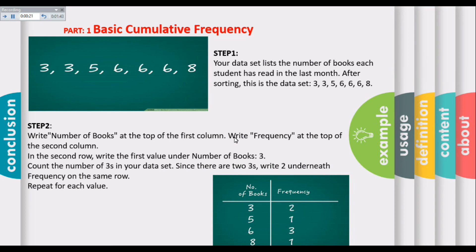Step 2: Map two columns as shown in the picture. Write number of books in the first column and frequency in the second. In the first column, write the books which students have read. Since there are two students who read three books, our frequency will be two.